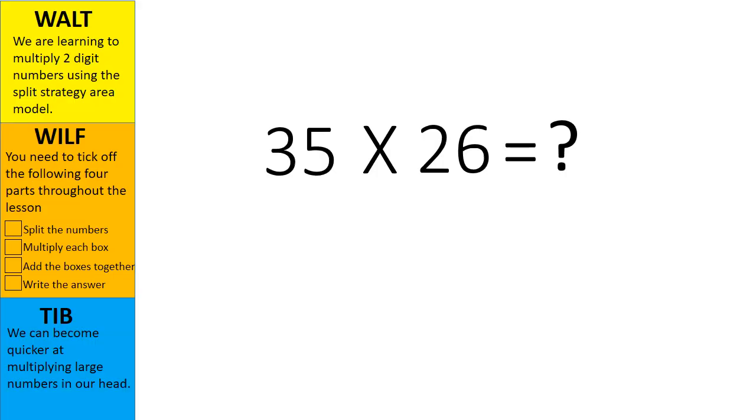Let's look at the problem 35 multiplied by 26. 35 is a two-digit number multiplied by another two-digit number 26. We need to find the answer when these two numbers are multiplied together. Looking at these numbers I can't multiply them off the top of my head but I know a strategy that we can use. Today we are going to use the split strategy to solve this number sentence.